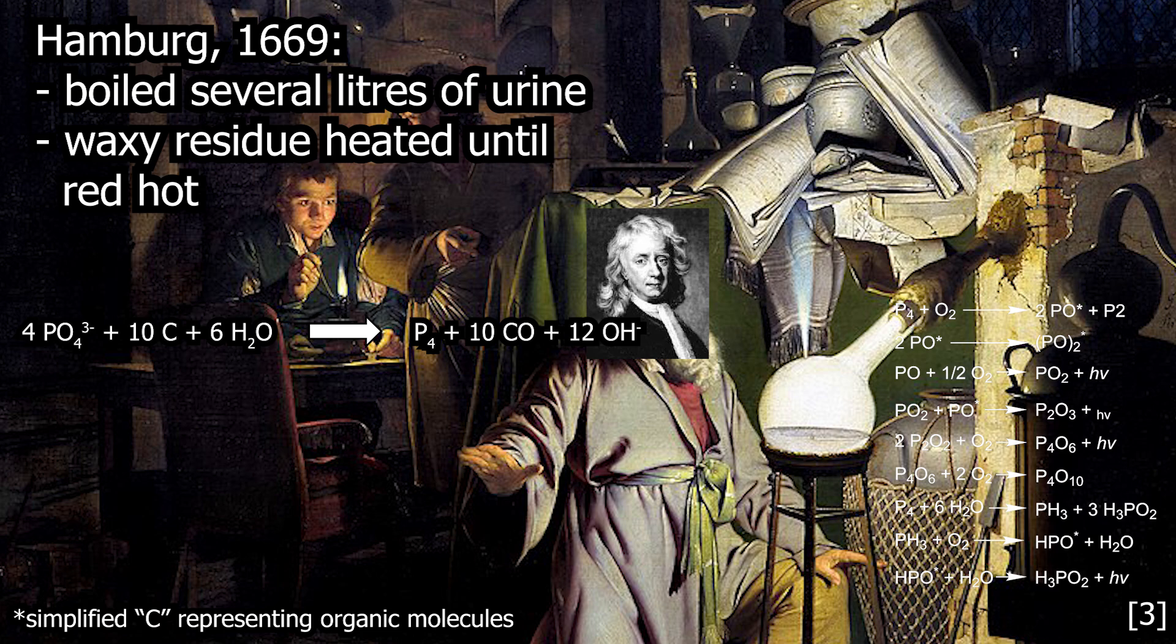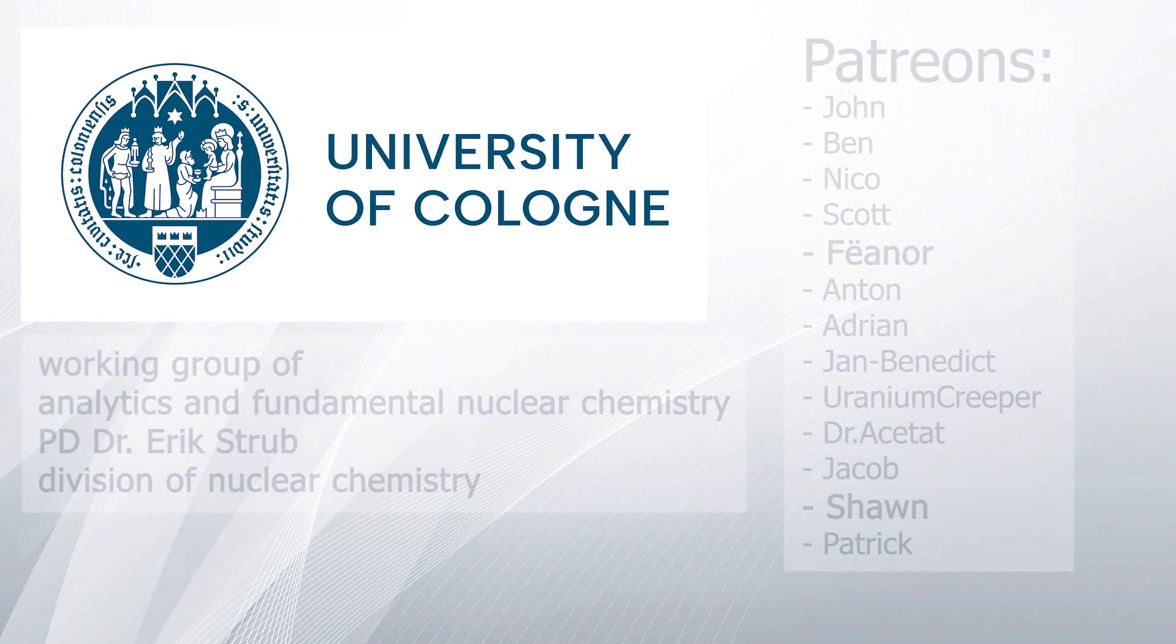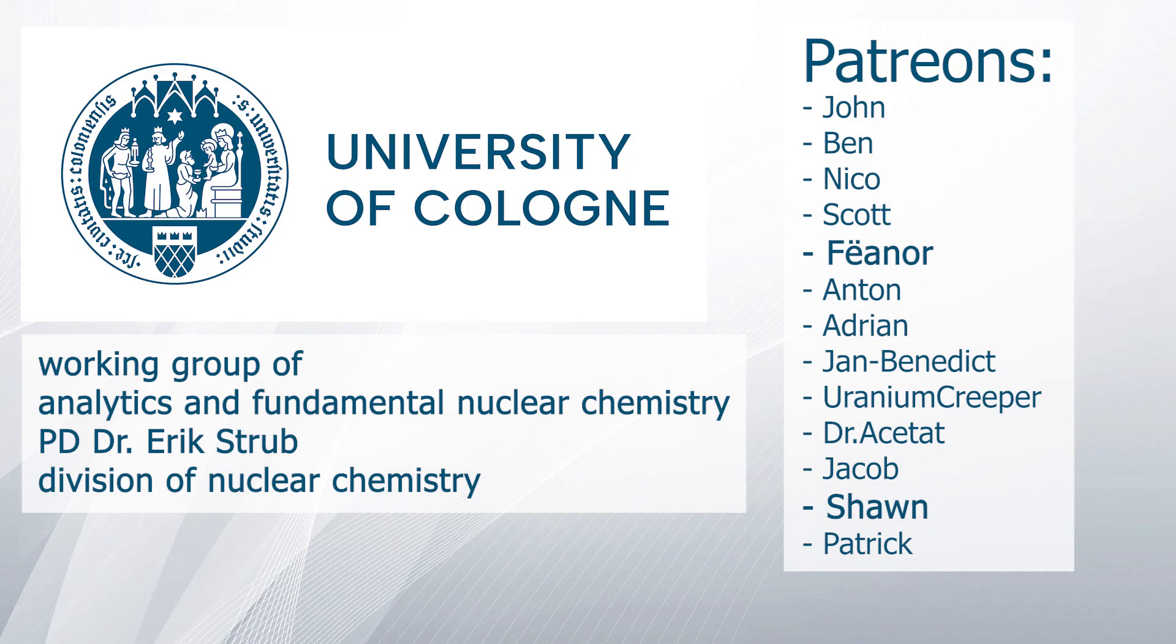But unfortunately, he only discovered elemental phosphorus. Which is very impressive, because at that time the concept of chemical elements, as we know it today, did not exist. And white phosphorus is already quite complex to produce elementally. So I thought there was a nice link between us who threw platinum into a neutron source and a dude who boiled down several hundred liters of urine 400 years ago. A special thanks goes to the Working Group of Analytics and Fundamental Nuclear Chemistry from Dr. Erik Strub and the Division of Nuclear Chemistry at the University of Cologne, and to my Patreons. With that being said, thank you for your attention and goodbye!